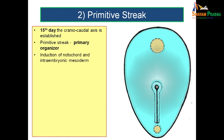Why is it known as the primary organizer? The primary organizer is the structure which induces the formation of notochord and intraembryonic mesoderm. After the formation of primitive streak, you get the formation of notochord and intraembryonic mesoderm — so the primitive streak is responsible for the formation of both.